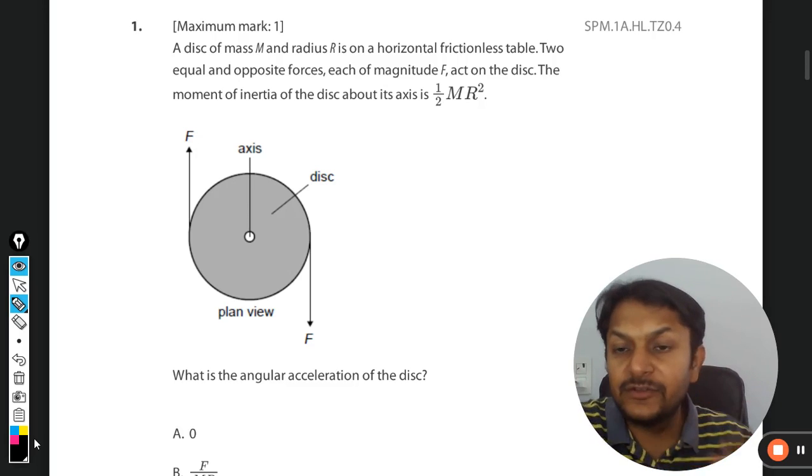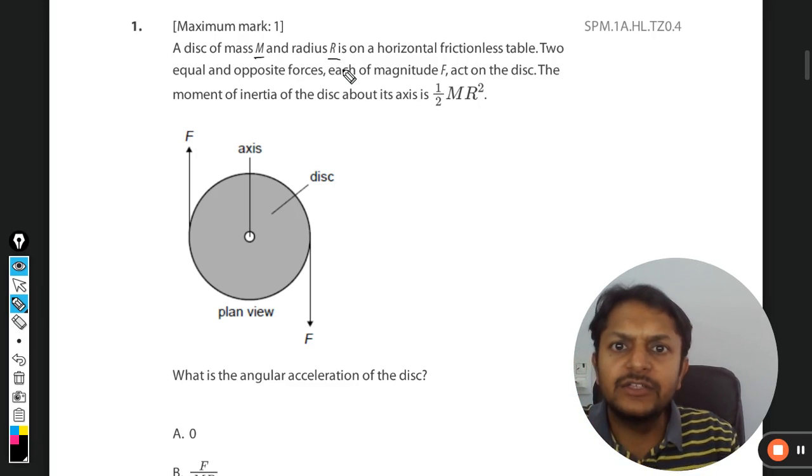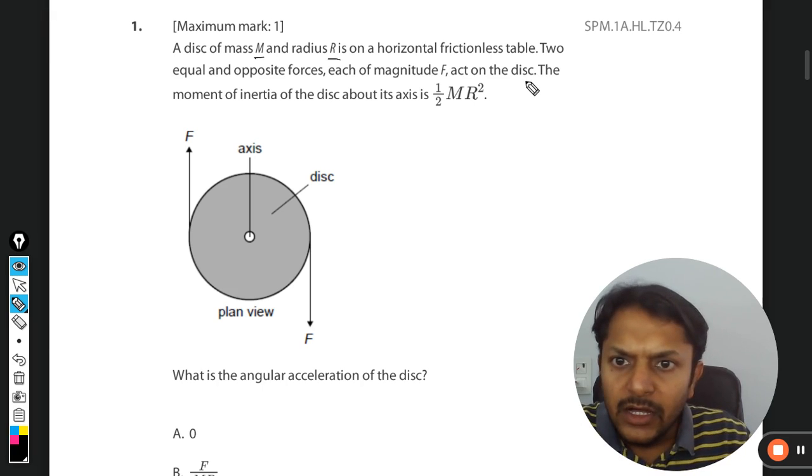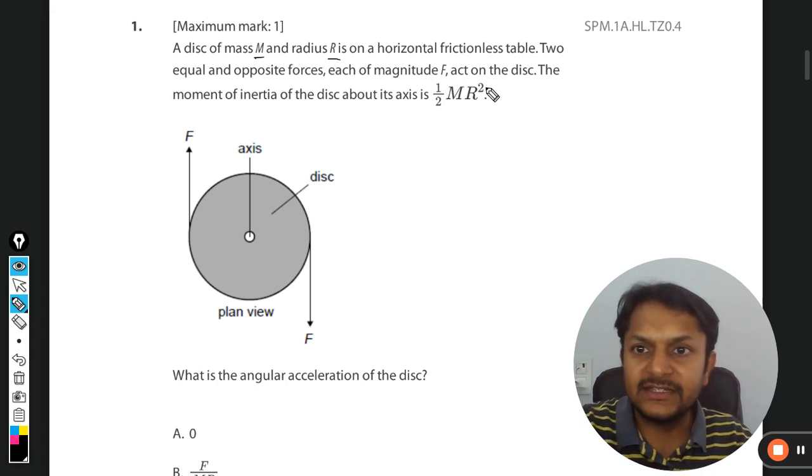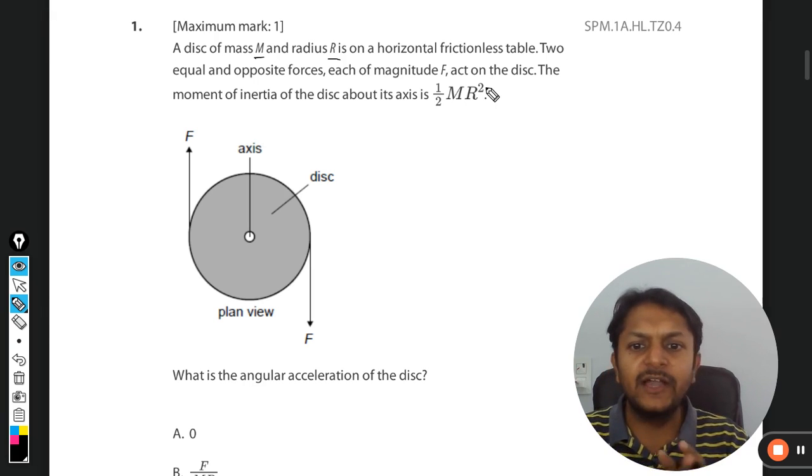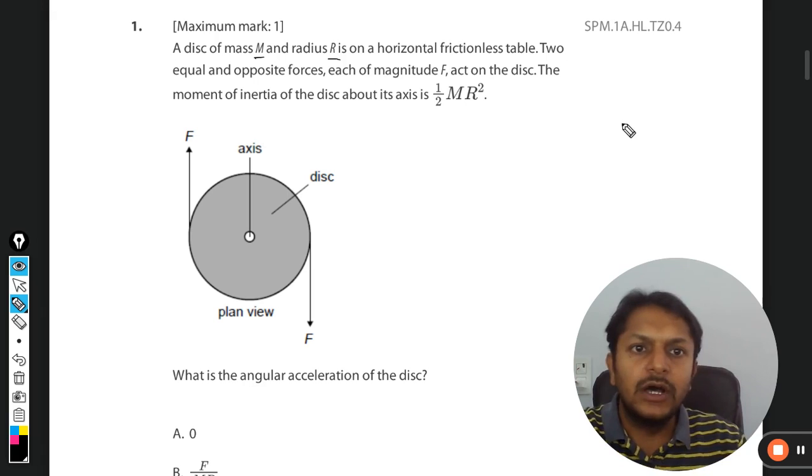Okay, dear student. Let's see what is in this question. A disc of mass M and radius R is on a horizontal frictionless table. Two equal and opposite forces, each of magnitude F, act on the disc. The moment of inertia is given as ½MR². What is the angular acceleration of the disc?